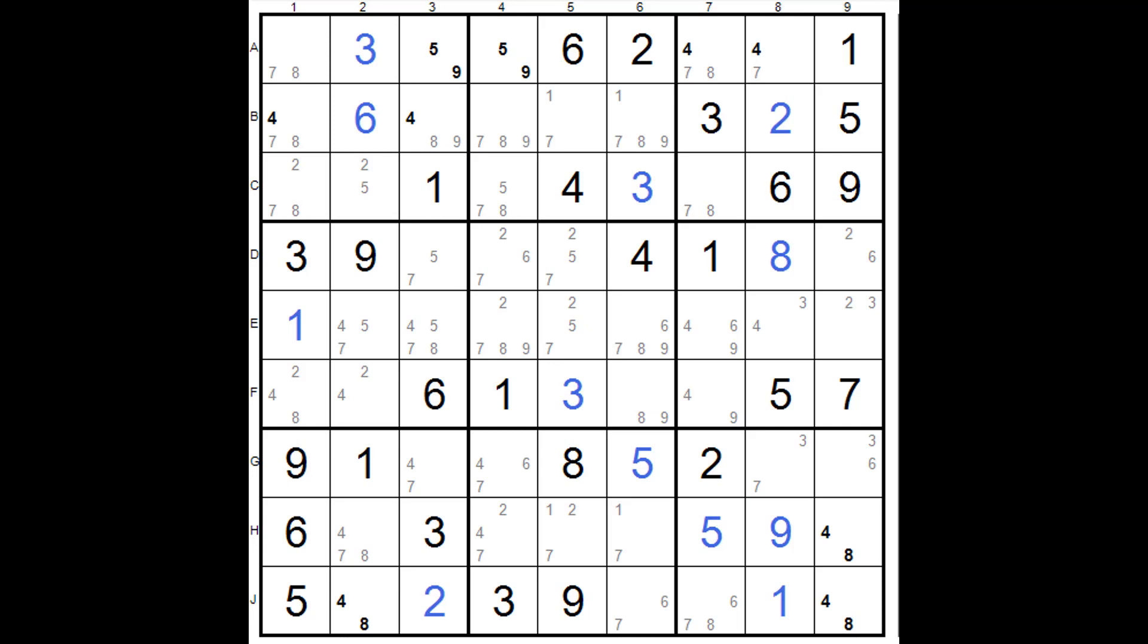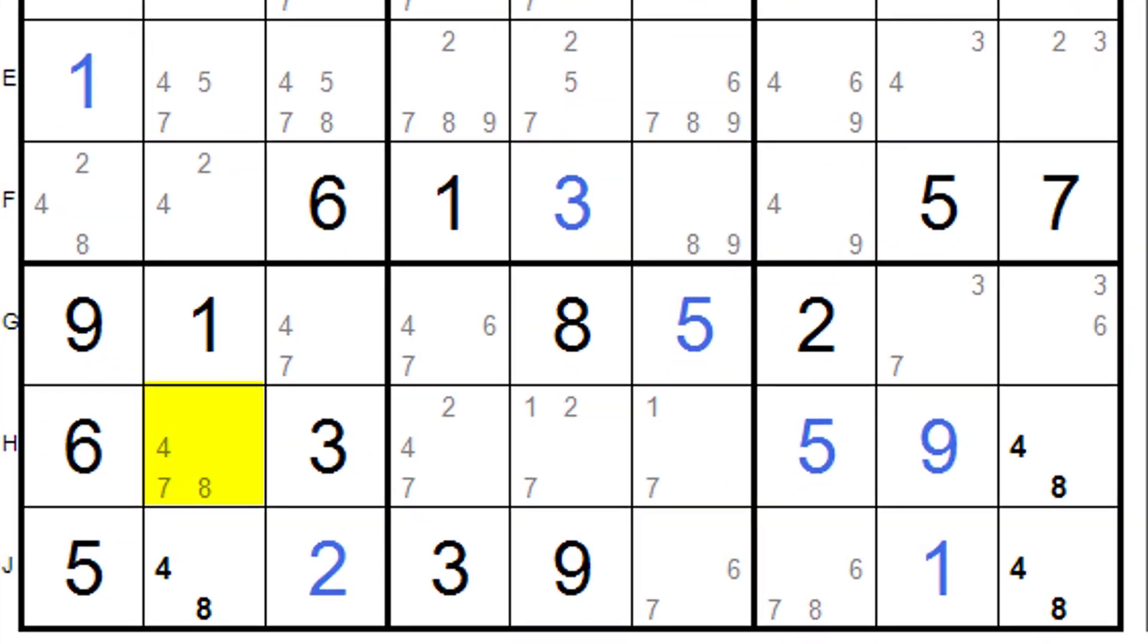So let's have a look at the four cells which are H2, J2 and H9, J9. So something akin to an x-wing and things like that.